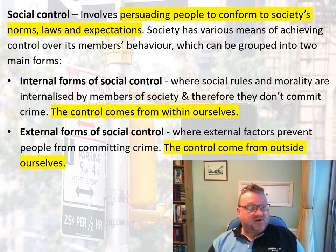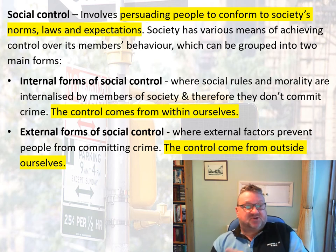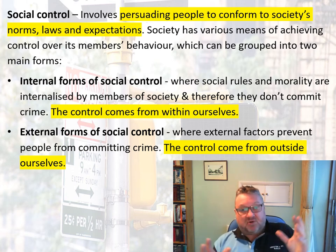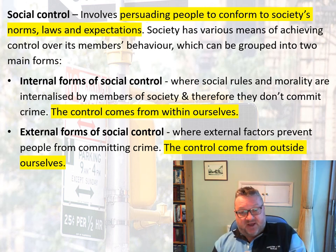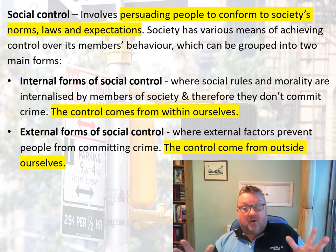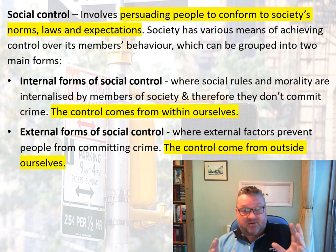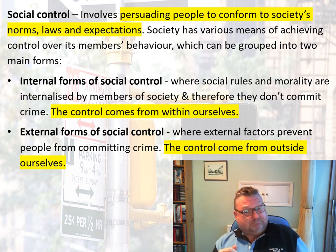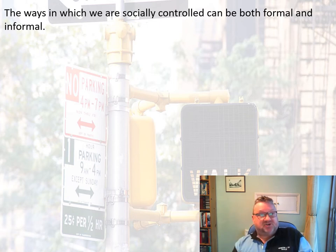The other form is external social control — these are external factors that prevent us from committing crime; the control comes from outside ourselves. For example, if I'm bombing down the motorway at 80 miles per hour and I see a speed camera or a police car, it controls my criminal behaviour by making me slow down to 70 miles per hour, which is the speed limit.